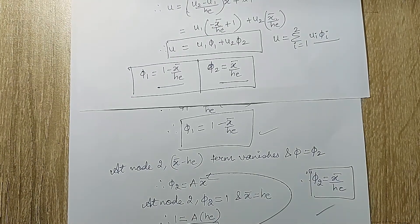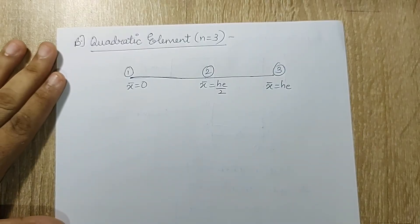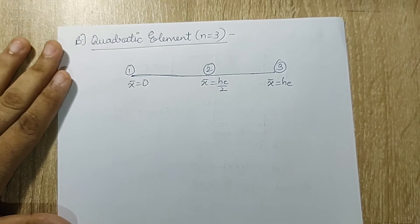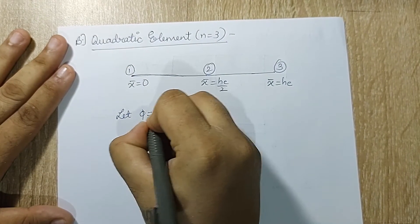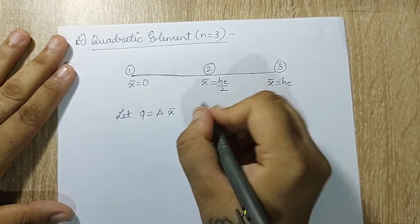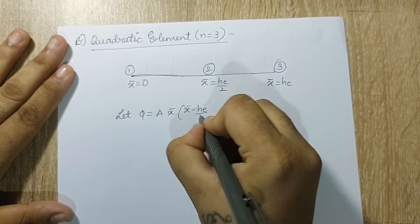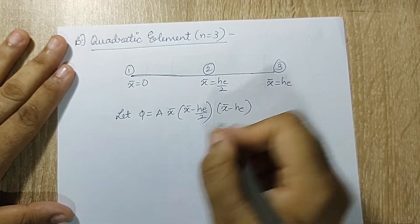This completes the Cartesian coordinate system derivation. Next I take a quadratic element where n = 3, meaning there are three nodes. I write φ = a × (terms from each node): node 1 contributes x̄, node 2 contributes (x̄ − h_e/2), and node 3 contributes (x̄ − h_e).